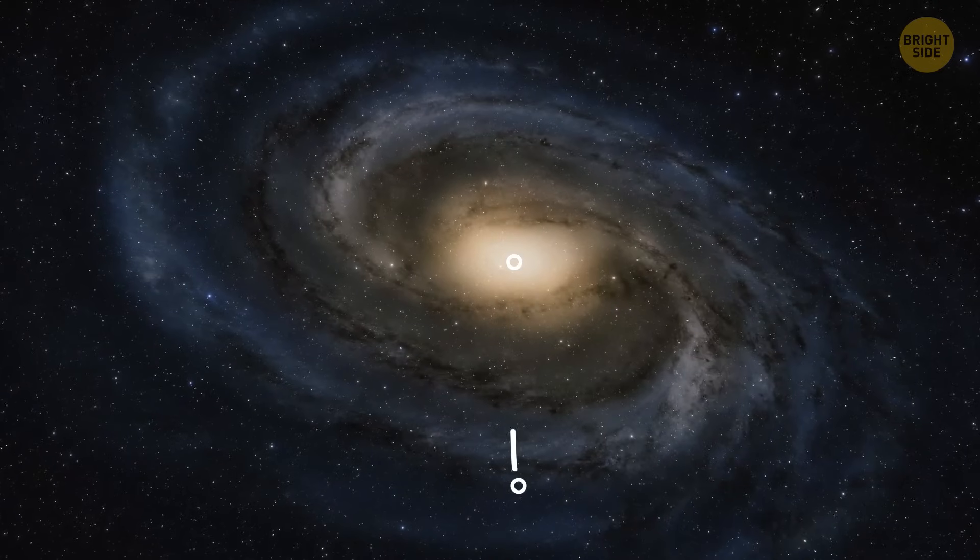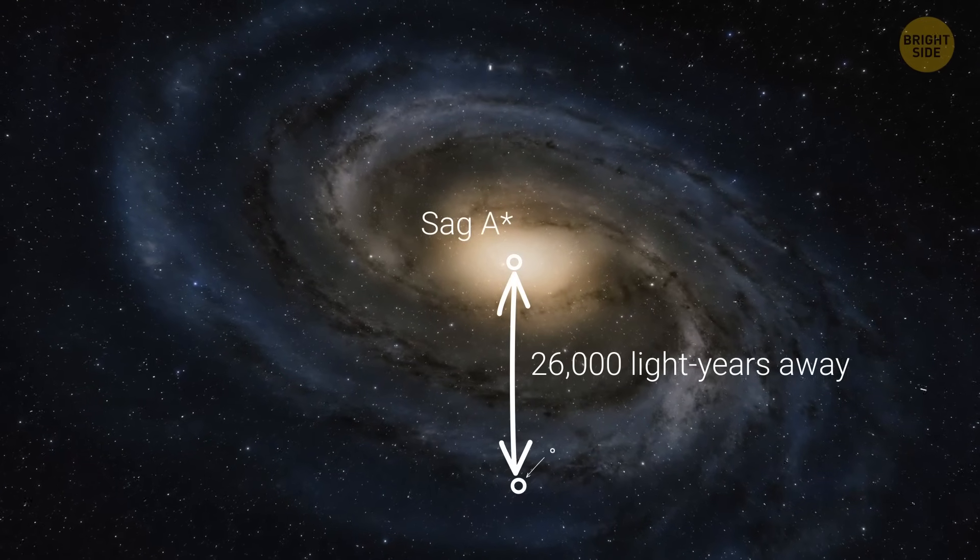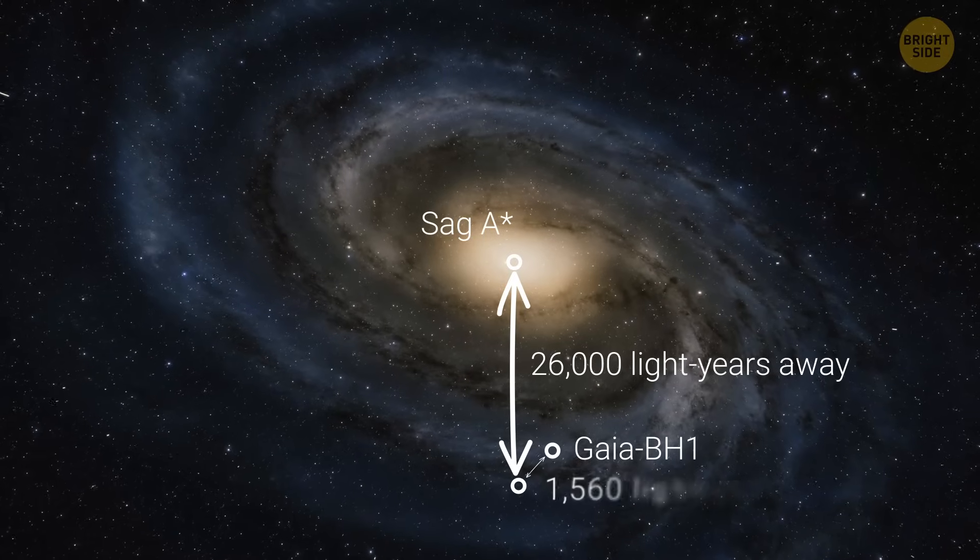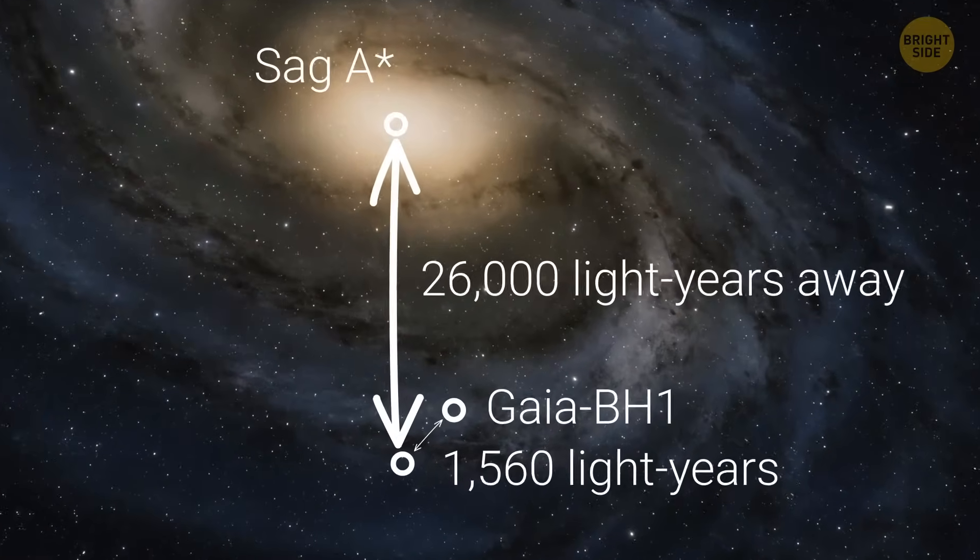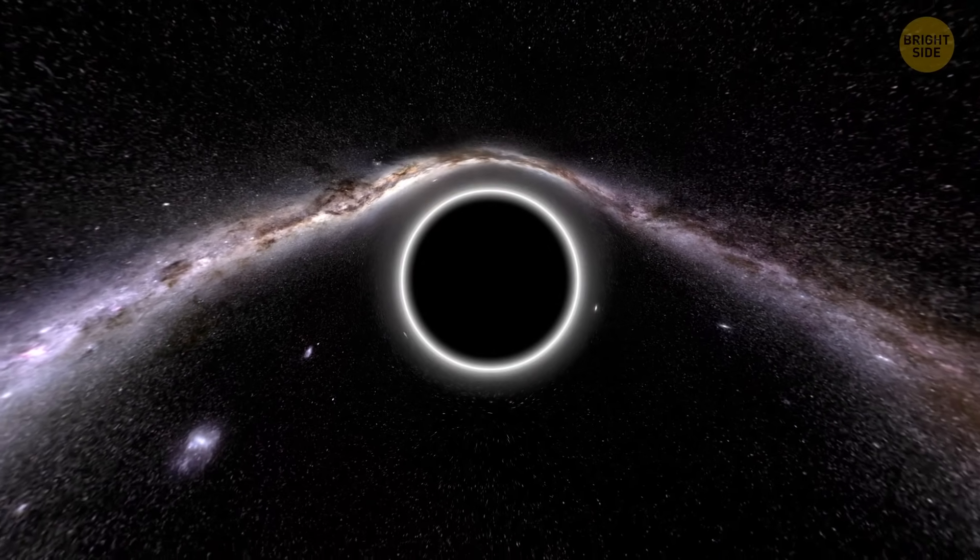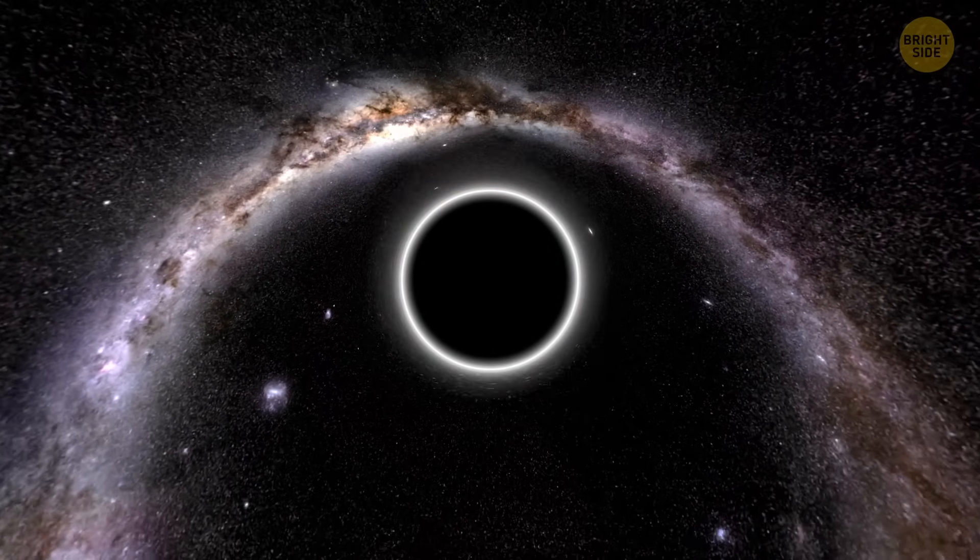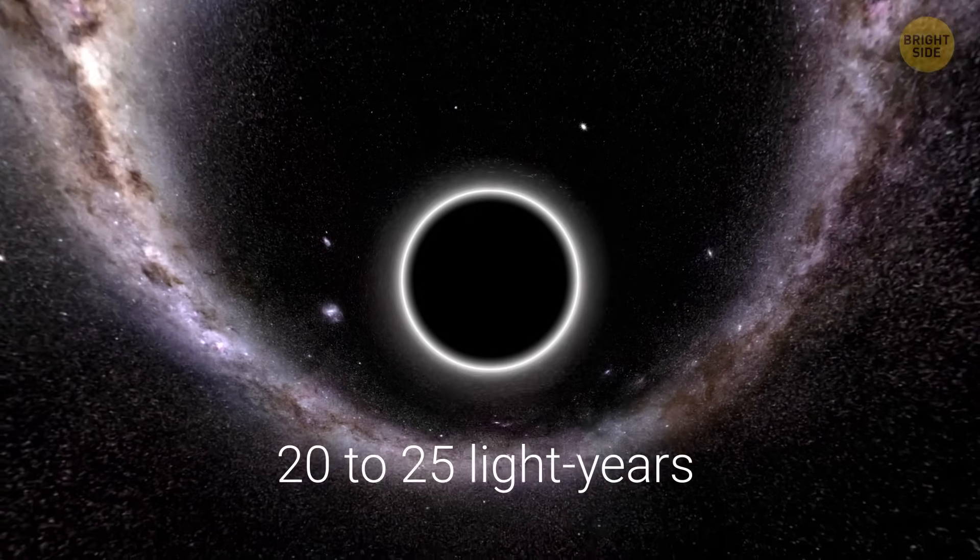Sag A-star is a mind-blowing 26,000 light-years away. But even the closest known black hole, Gaia BH-1, sits a whopping 1,560 light-years out. But Bambi isn't giving up. He thinks there could be a sneaky little black hole, chilling only 20 to 25 light-years from us. And he might not be totally off.